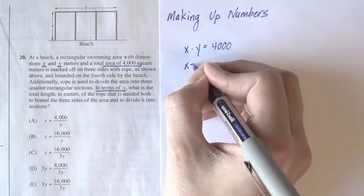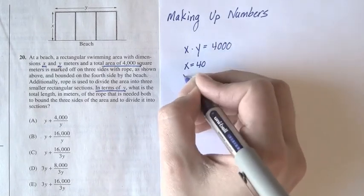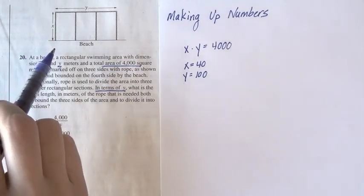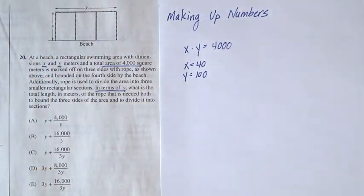So I'm going to decide that x is equal to 40, and y is equal to 100. This makes sense, x is the shorter distance, and then we have y the longer one, and 40 and 100 seem like a reasonable number.